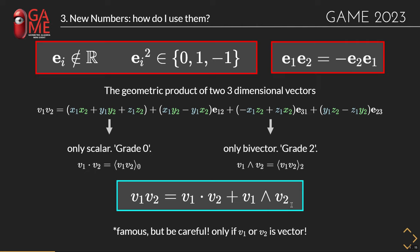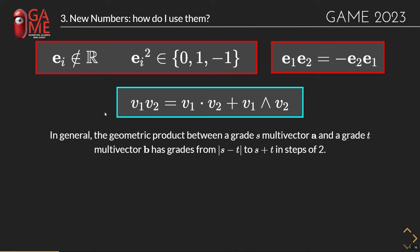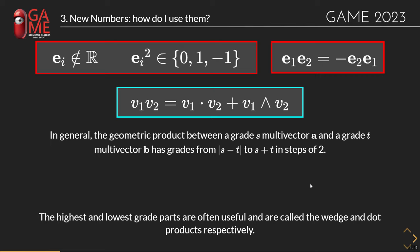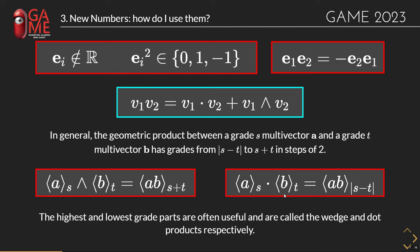This gives the famous formula: the geometric product of two vectors v1·v2 equals their inner (dot) product plus their outer (wedge) product. Be careful though — this formula only holds when both operands are vectors. In general, for a grade-s multivector times a grade-t multivector, the result has grades ranging from |s − t| to s + t in steps of two. The lowest-grade and highest-grade parts are the dot and wedge products respectively.